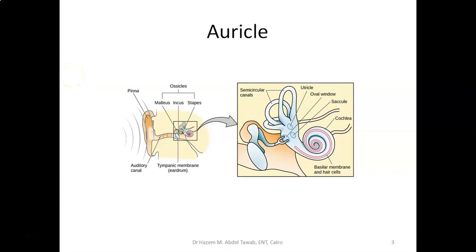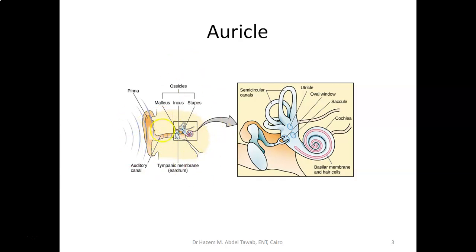The functions of the auricle are collection and localization of sound. The second part is the external auditory canal. It works to transmit sound waves from the auricle to the tympanic membrane. Another important function is that, due to its angulation, it protects the eardrum from injury, because the external auditory canal is not straight — it is angulated.